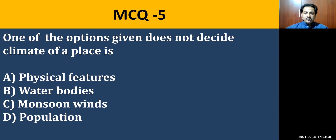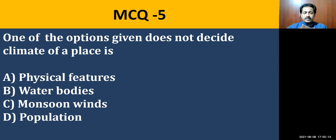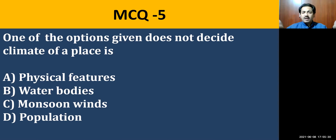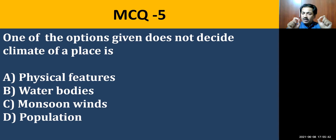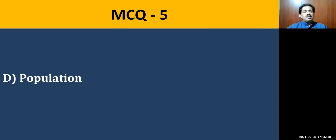Question number five: one of the options below does not decide the climate of a place. To decide a climate of a place, many factors play a role. The options are physical features, water bodies, monsoon winds, and population. The correct option — the one that doesn't belong — is population. Population is in no way linked with deciding the climatic condition of a place. Physical features, water bodies, monsoon winds, and altitude all decide the climate of a particular place.